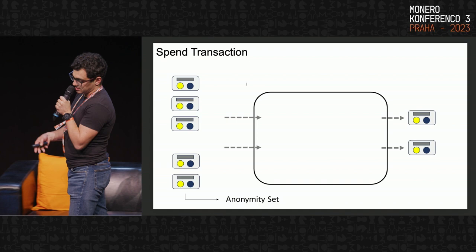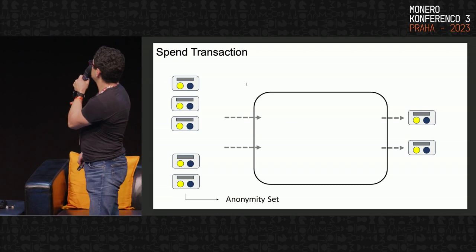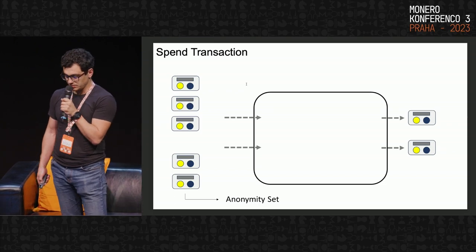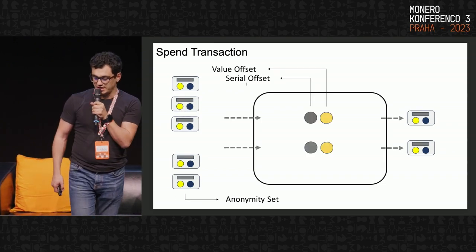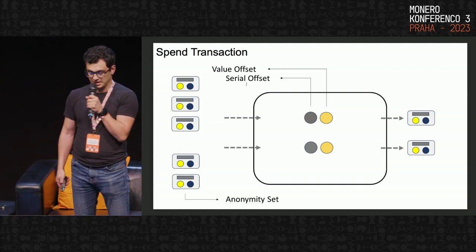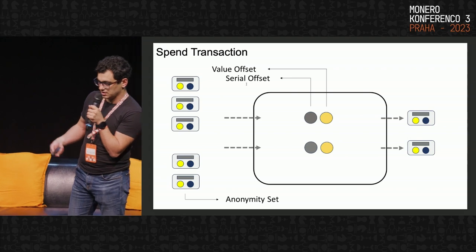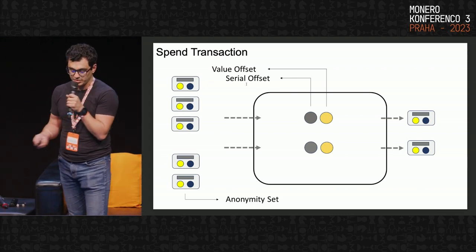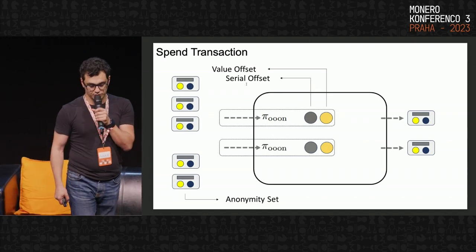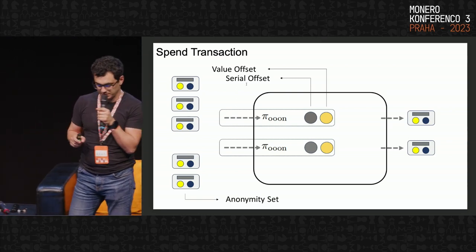Consider a regular example which consumes two inputs and creates two new outputs. All inputs should refer to a certain anonymity set. The spend transaction first creates two offset commitments — one for the value of the original coin and one for the serial — these commitments encode the same value as the original coins but are blinded separately so they cannot be linked with the original ones. The spend transaction generates a special membership proof showing that this pair of commitments corresponds to one of the coins in the anonymity set without revealing the link.